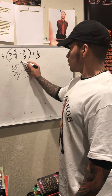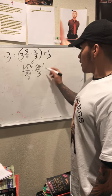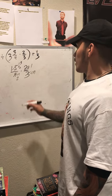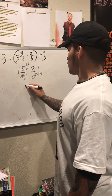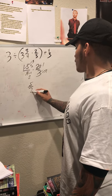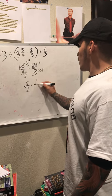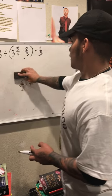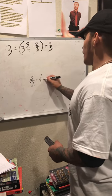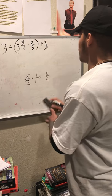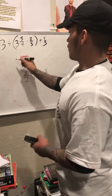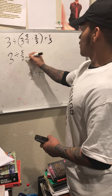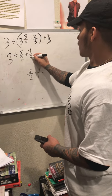15 divided by 3 comes out to 5, and 3 divided by 3 comes out to 1. So rewriting that, it comes out to 5 over 2 times 1 over 1, which comes out to 5 halves. So now the problem is 3 divided by 5 over 2, plus 4 over 3.